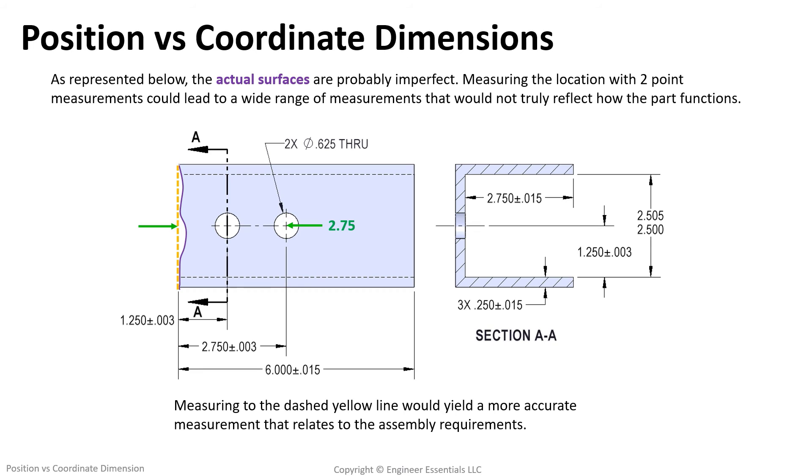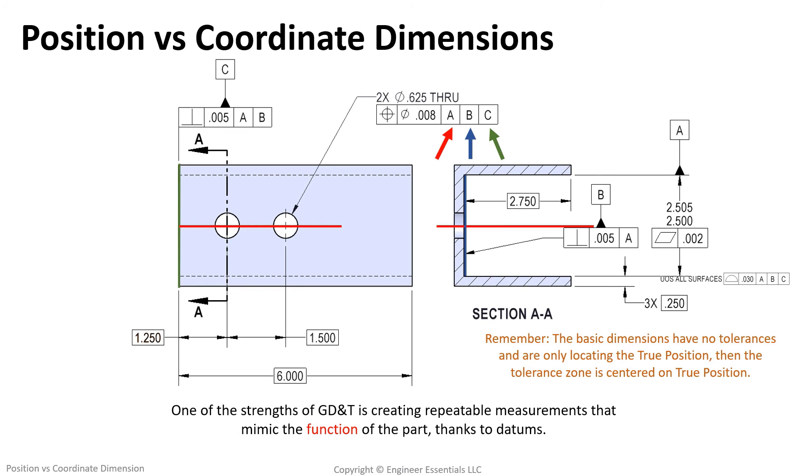But if you recall, the original assembly, this entire edge engages the mating part, so the high points of the surface will likely dictate how far away the hole will be from that edge, not just the two-point measurement. We see now how this part would assemble with no problem, and we don't need to reject this part.